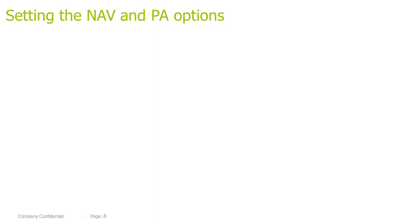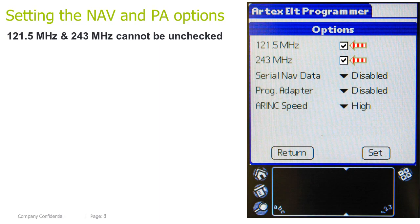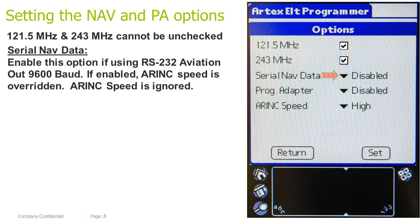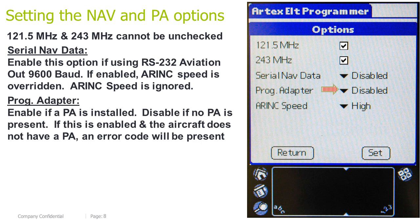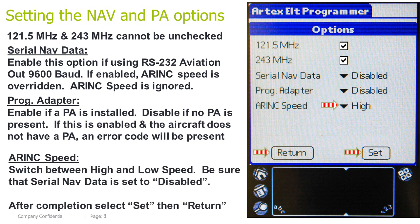Setting the NAV and PA options, continued. 121.5 and 243 MHz cannot be unchecked. Serial NAV data: enable this option if using RS232 aviation out at 9600 baud; if enabled, wiring speed is overridden and can be ignored. Programming adapter: enable if a PA is installed on the aircraft; disable if no PA is present. If this is enabled and the aircraft does not have a PA, an error code will be present. Wiring speed: switch between high and low speed; be sure that Serial NAV data is disabled. After completion, select Set and then Return.